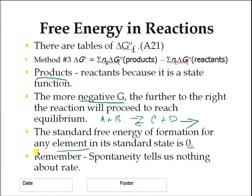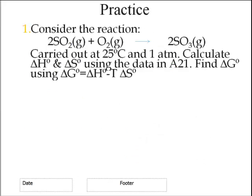And then this last little line. Remember, spontaneity tells us nothing about rate. So if we get a negative delta G, we can say that reaction is spontaneous. It will go. But what it doesn't do is it doesn't tell us about how fast it will go. For example, rusting is a spontaneous process. However, it takes a long time.